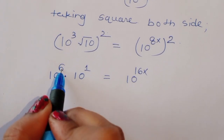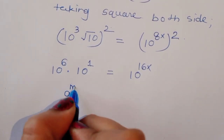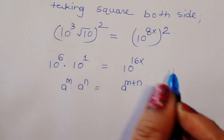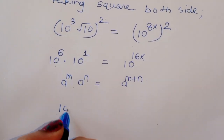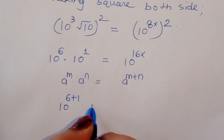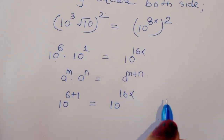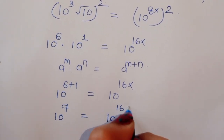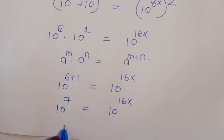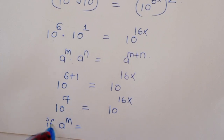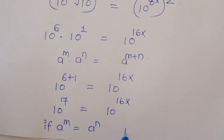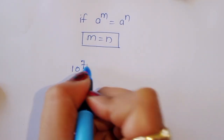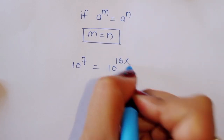Now 10 raised to 6 times 10 raised to 1 — we know the formula: a raised to m times a raised to n is equal to a raised to m plus n. So using this formula here we can write 10 raised to 6 plus 1 is equal to 10 raised to 16x.